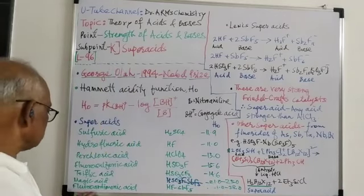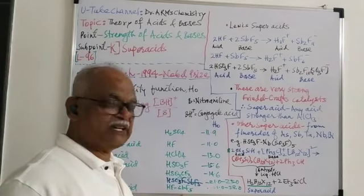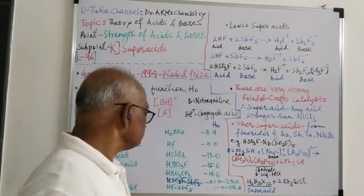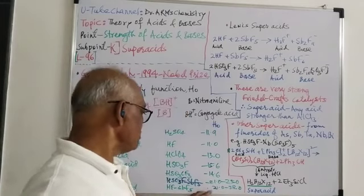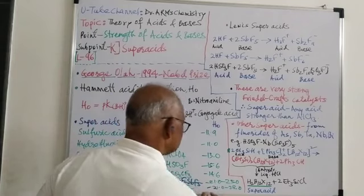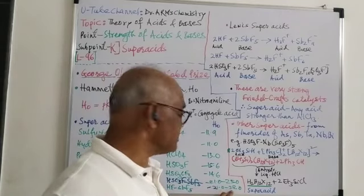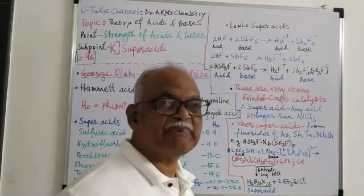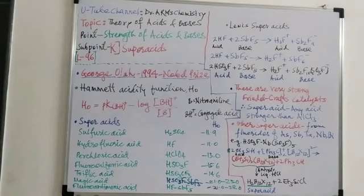Next is fluoroantimonic acid, that is HSO3F-SbF5. It has H0 value minus 21.0 to minus 28. This is also depending upon its concentration.